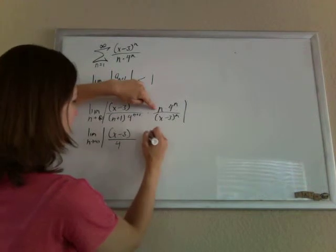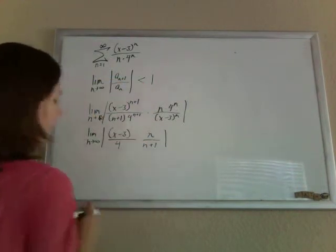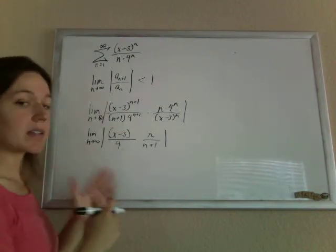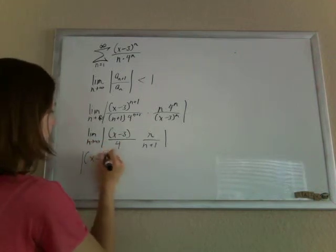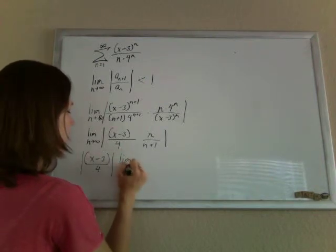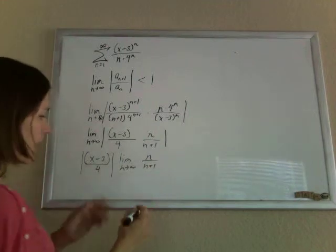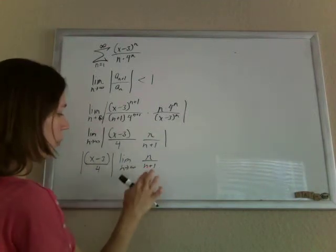And on the top, you've got an n, and on the bottom, you have an n plus 1 surviving. Now, because this limit is only based on n, anything else is a constant relative to it. So I can pull out x minus 3 over 4, limit as n goes to infinity, n over n plus 1, and this limit is just going to go to 1.